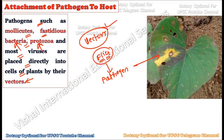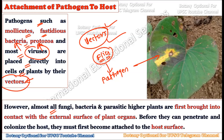Bacteria, protozoa, and viruses do not have the ability to travel by themselves to reach a plant. They always require vectors — some kind of vector is always involved in the transmission of the infectious pathogen to the plant. Vectors take these viruses, bacteria, or fungi from one place and deliver them to the plant they are going to infect.